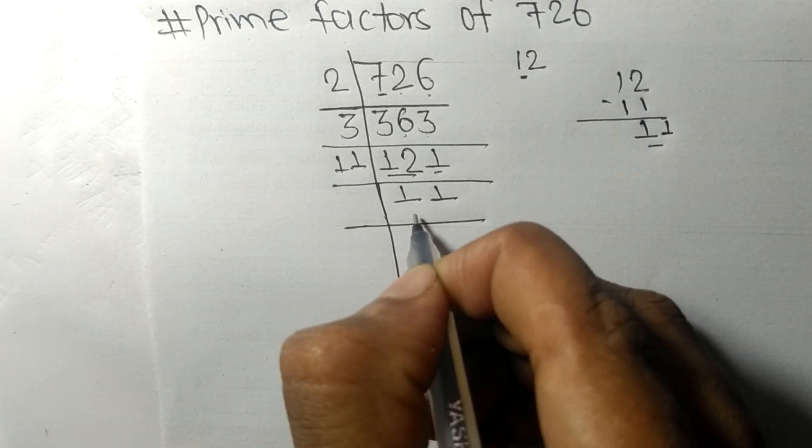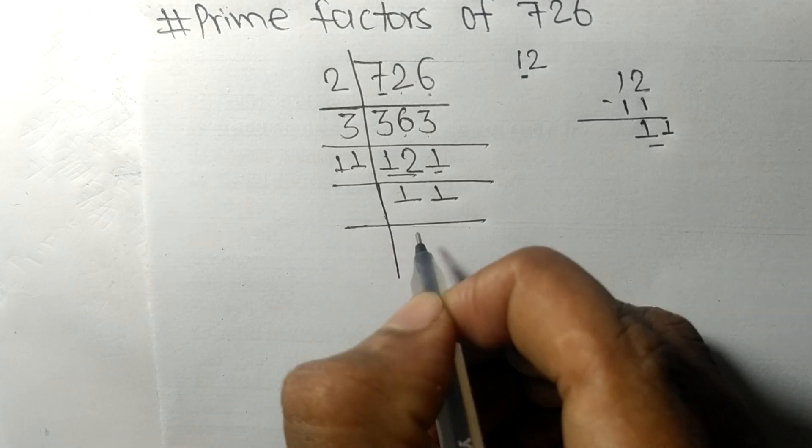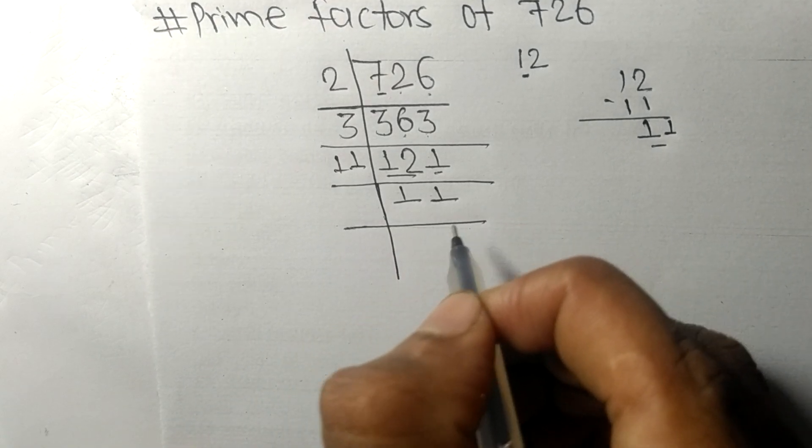We got 11 on dividing 121 with 11. Now 11 is a prime number, so it is divisible by 11 only, and on dividing we get 1.